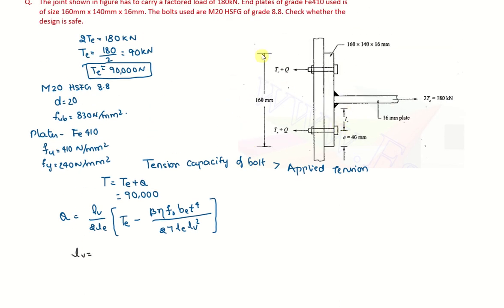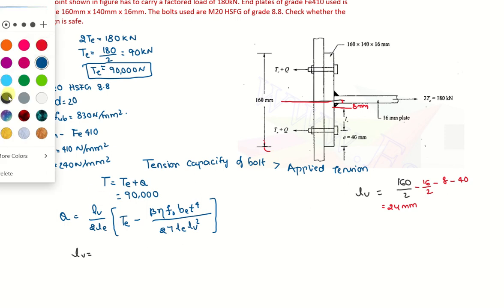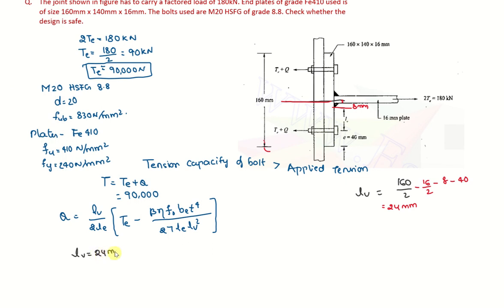So let us check. What is LV? See LV we can see from this diagram. So LV is this value. So total we have 160. So LV is equal to 160 by 2 minus this half minus this half. That is 16 by 2. This is total is 16 mm plate. So by 2 minus. So we are assuming the fillet weld as 8 mm. This is the assumption only. Minus 8 and minus this end distance. That is 40. We will be getting it as 24. So LV is 24 mm.